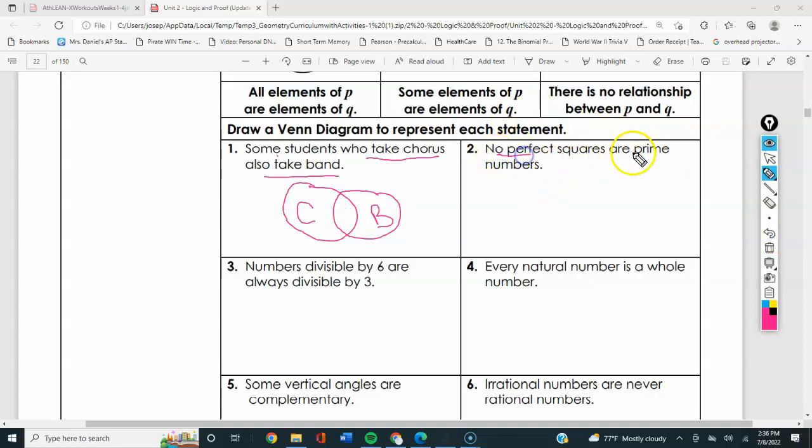How about this one? No perfect squares are prime numbers. None of them. No sharing means two separate circles. So all of my perfect squares and my prime numbers, no overlap. No perfect squares are prime numbers and no prime numbers are perfect squares.